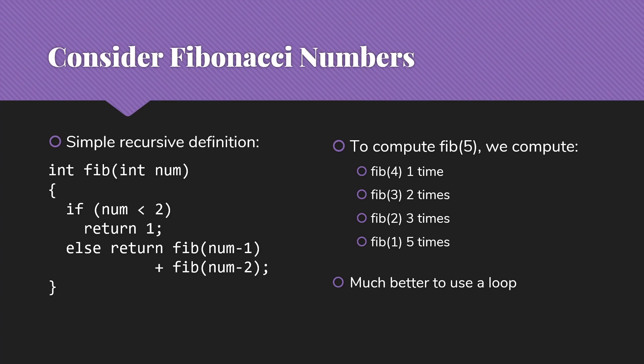So it's much better to use a loop starting with Fib of 0 is 1, Fib of 1 is 1, and keep track and build up until you get to Fib of 5, computing each value just one time.